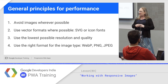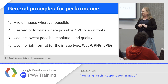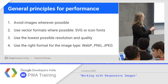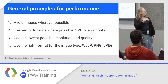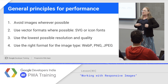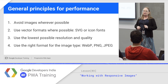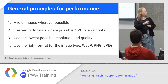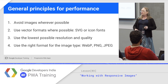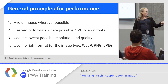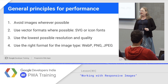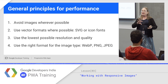The first rule is: if you don't need an image, don't use it. If you can use SVG or an icon font, that's much smaller and scales to any device resolution. Or using responsive images, select the lowest possible resolution and quality and pick the right format for the image type. For a photograph, JPEG or WebP work really well. If it's a diagram, it might be WebP or PNG. JPEGs are less useful for diagrams because of the way they compress.